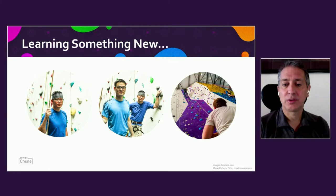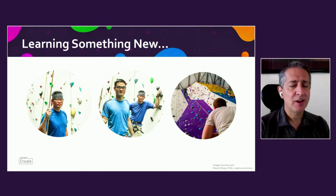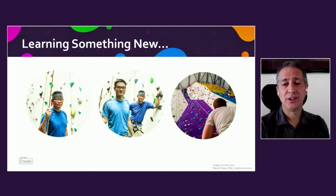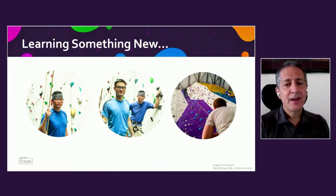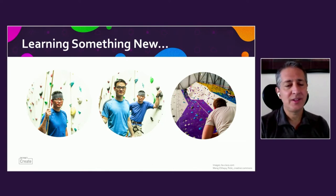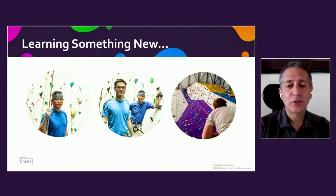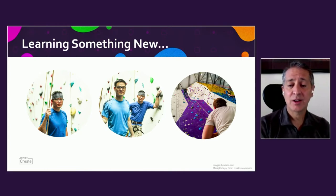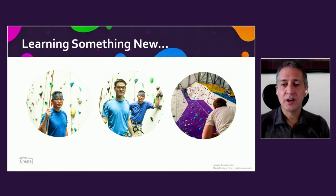Think about when you want to learn something brand new — say, rock climbing. You see somebody who can really rock climb and you ask if they'll teach you. They say, 'I know how to do it, hang out with us.' After a while you get into the group and start to learn. But sometimes you want someone who's willing to actively teach you and say, 'Here, you can do it.' So that's the evolution: I can do it. We can rock climb. You can rock climb.